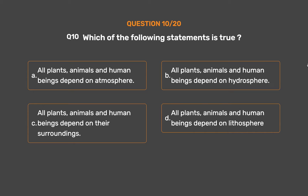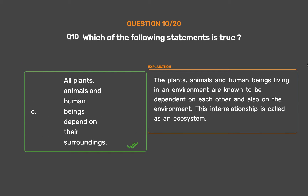The correct answer is Option C: All plants, animals, and human beings depend on their surroundings. Plants, animals, and human beings living in an environment are known to be dependent on each other and also on the environment. This interrelationship is called an ecosystem.